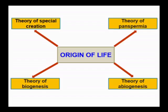After the origin of Earth, how did life begin on the prebiotic Earth? To explain the origin of life, several philosophers and thinkers proposed several theories. The important theories are the theory of special creation, theory of panspermia, theory of biogenesis, and theory of chemical evolution.